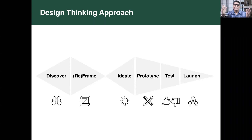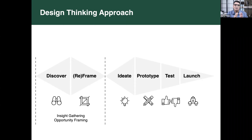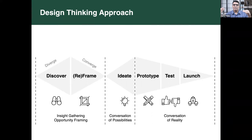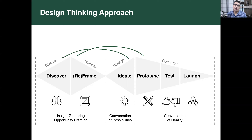There are many ways to slice the design thinking framework. We cut it into three slices: first, insight gathering and opportunity framing; followed by a conversation of possibilities — what could we do; followed by a conversation of reality — what should we do. The geometry itself is instructive: it's called the double diamond, divergent then convergent — zoom out, zoom in, zoom out, zoom in. This model may appear linear, but it is anything but. We constantly jump back and forth as we learn new things, new insights are uncovered, and assumptions are challenged.